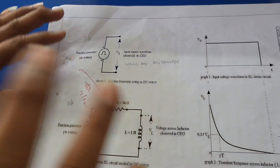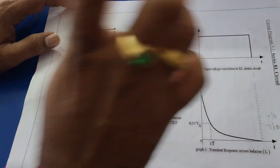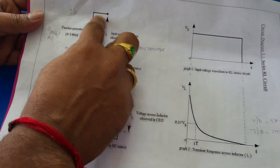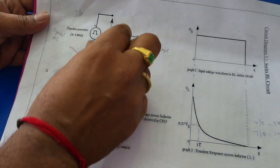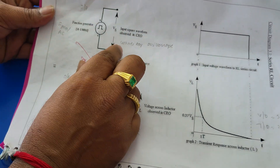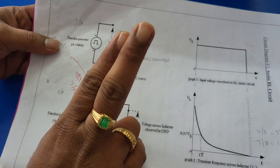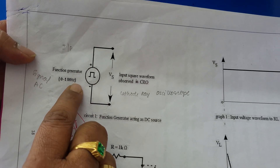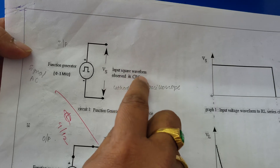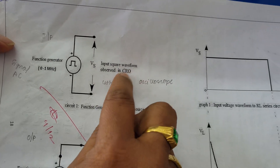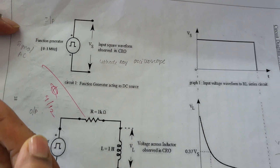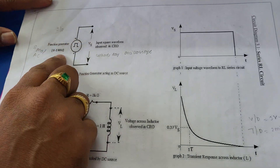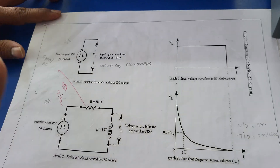In this experiment the main aim is to set the input voltage and input waveform. This is the circuit diagram. To set the input voltage we require only two apparatus: one is the function generator, which has a range from zero to one megahertz, and second is the CRO — cathode ray oscilloscope — which is used to display the signal. There is some arrangement in the function generator and CRO to display this signal.